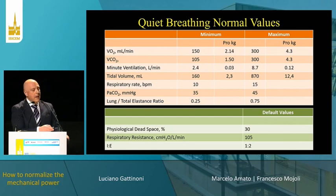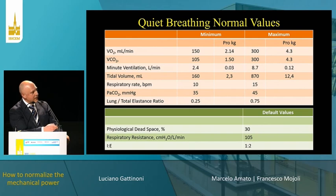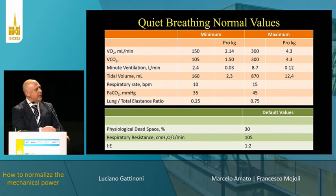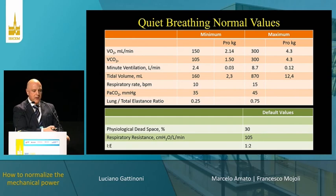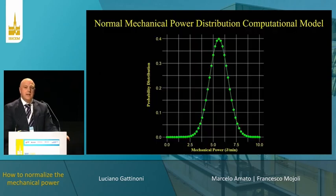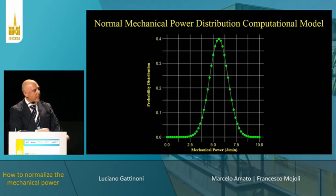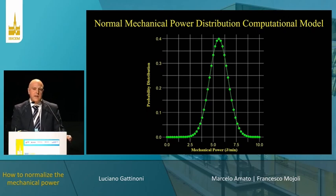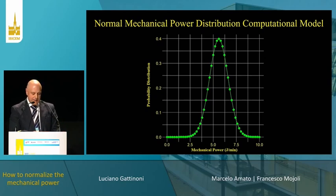Looking at a range of variables — VO2, VCO2, minute ventilation, the lung-to-total elastance ratio — with fixed physiological dead space, resistance, and I:E ratio, you can see there is a Gaussian distribution of mechanical power during quiet breathing. The most frequent value is about 5 to 6 joules per minute, which confirms what classical physiology had estimated at a theoretical level.